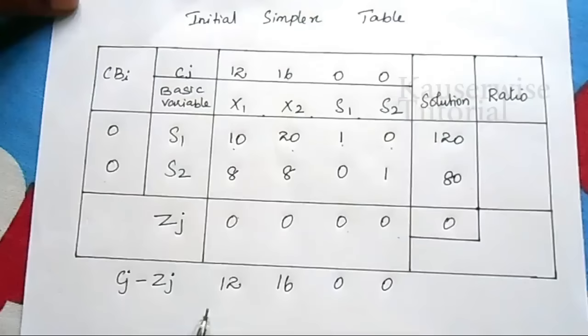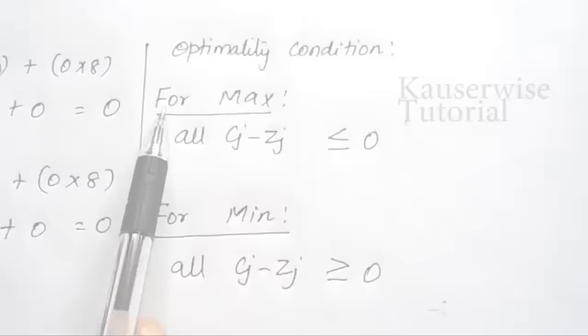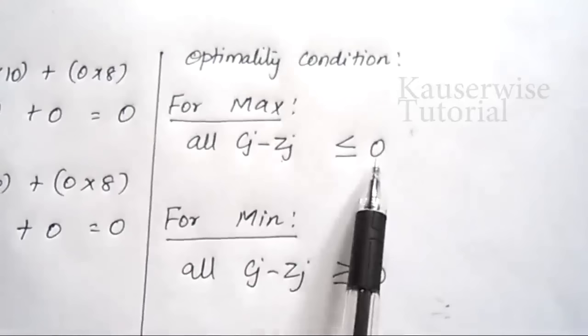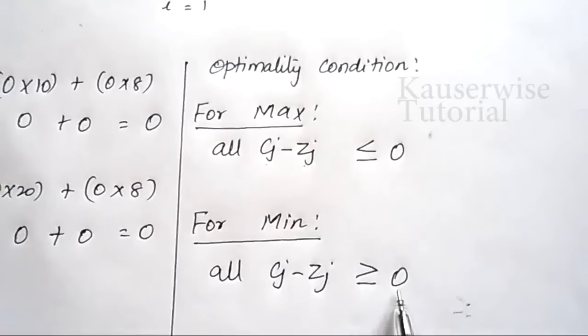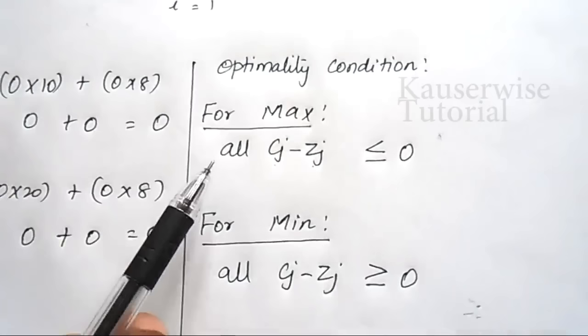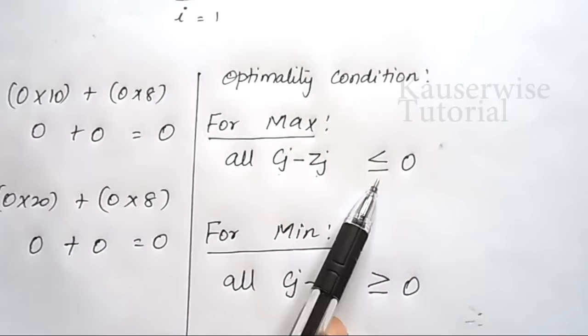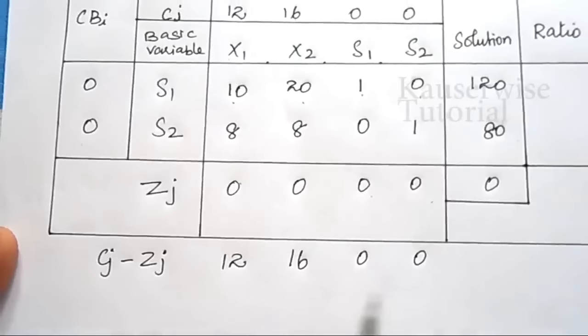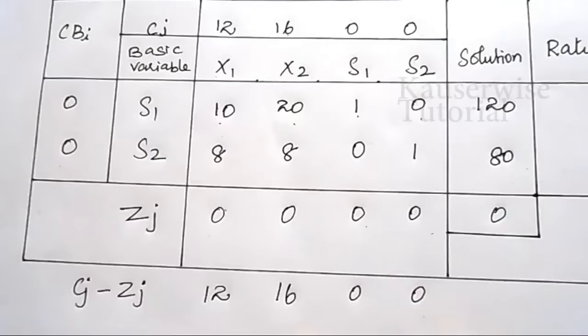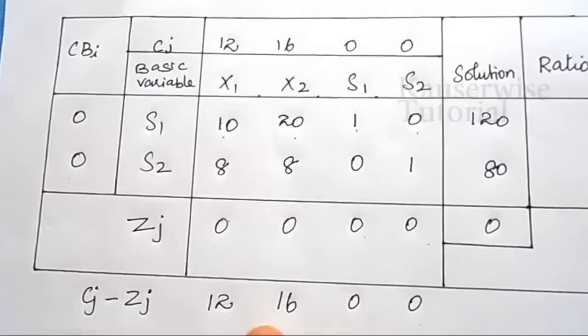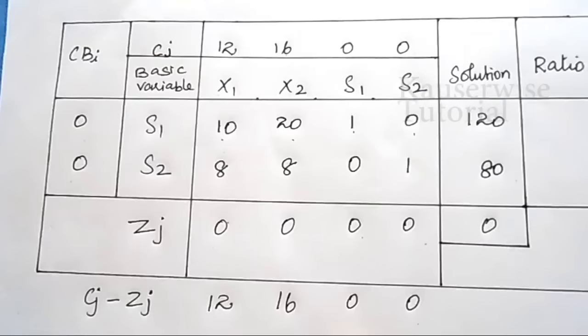After finding cj minus zj values, check the optimality condition. For a maximization problem, all cj minus zj values should be less than or equal to 0 (zero or negative). For a minimization problem, all values should be greater than or equal to 0. Here we have positive values 12 and 16, so we have not reached optimality and need to proceed further.